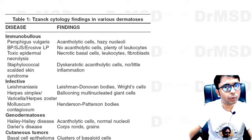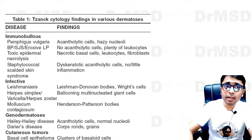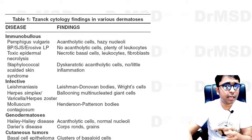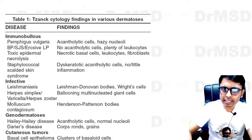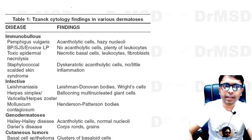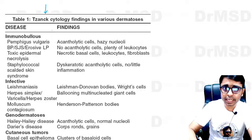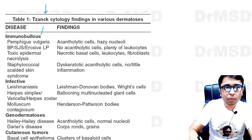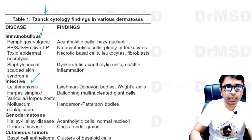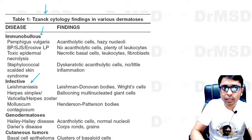After doing all this, we observe it under the microscope and we can see various presentations — various types of cells can be noted in different diseases. In the immunobullous and infective conditions, we are concerned about Tzanck cytology.